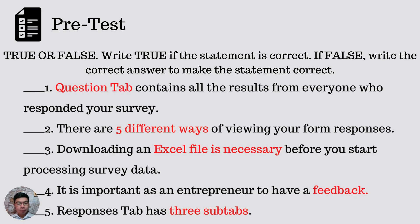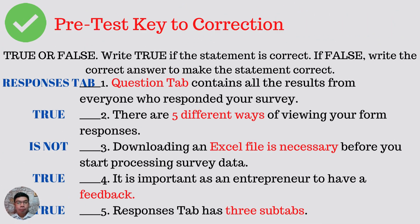Let us now check your work. Number one: the Question tab contains all the results from everyone who responded to your survey. The correct answer is Responses tab — meaning it is false. Two: there are five different ways of viewing your form responses — true. Three: downloading an Excel file is necessary before you start processing survey data. Four: it is important as an entrepreneur to have feedback — true. Five: the Responses tab has three sub-tabs — true.